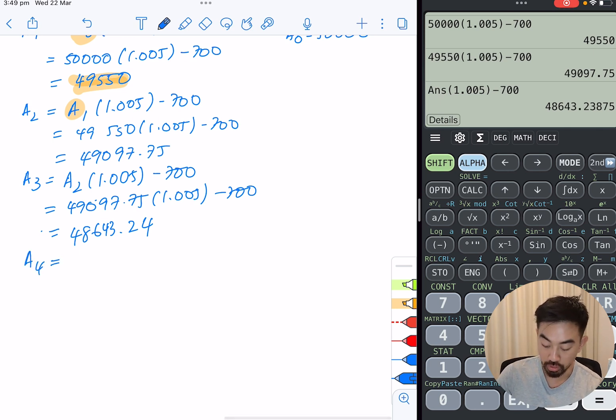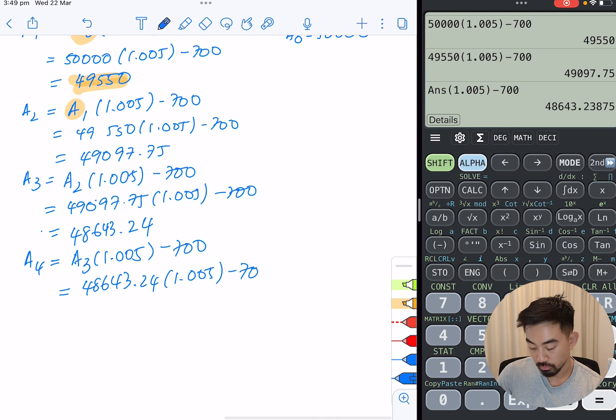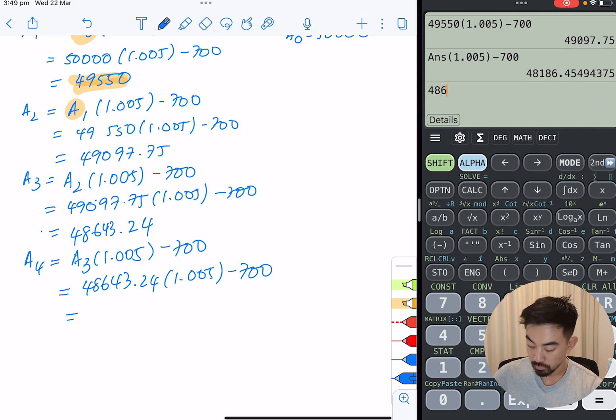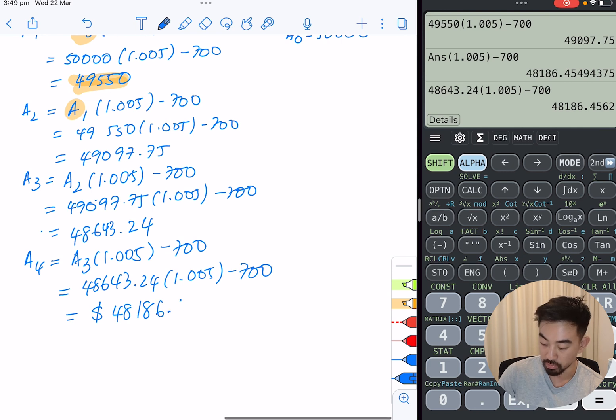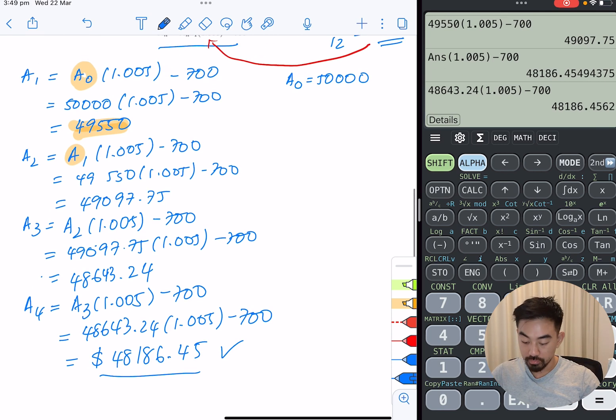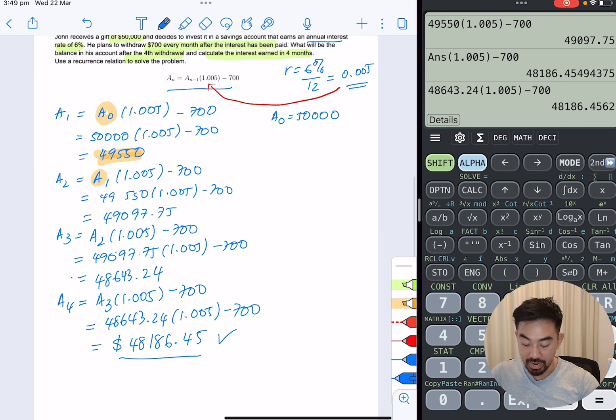Lastly, last month. So A3, times 1.005 minus 700. $48,643.24 times 1.005 minus 700. So your answer should be $48,186 and 45 cents. So that's how much he has after the fourth withdrawal.